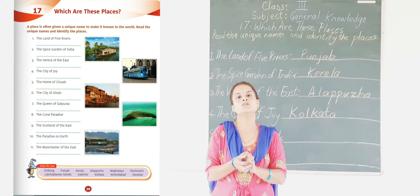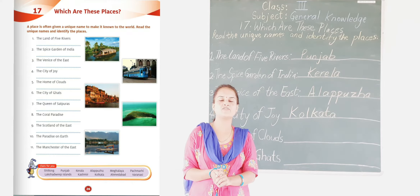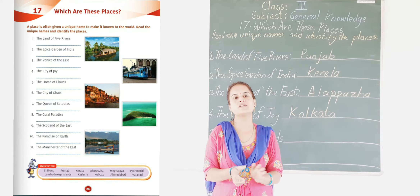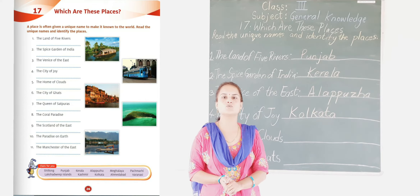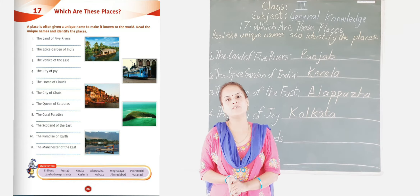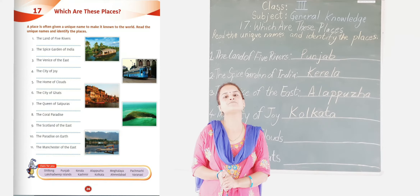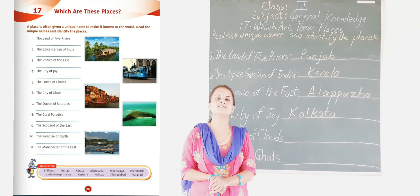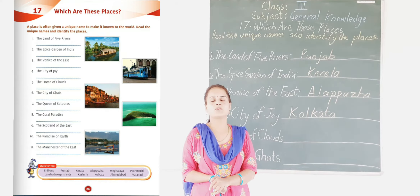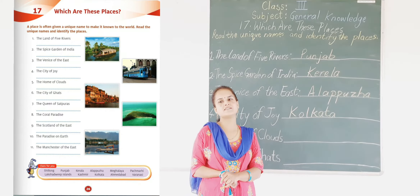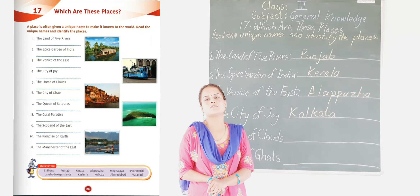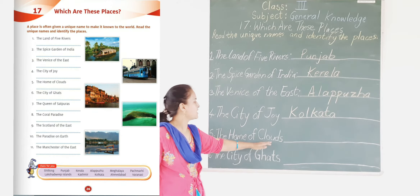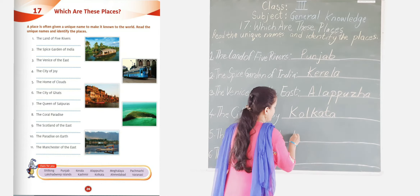The next place is a state of our India where we find there is heavy rainfall. This place is the place where there is heavy rainfall every year. The Home of Clouds is located here.